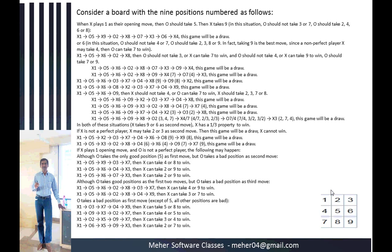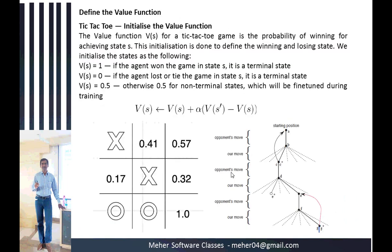For the tic-tac-toe value function, we initialize: value(s) = 1 if the agent won the game (terminal state), value(s) = 0 if the agent lost or tied (terminal state), and value(s) = 0.5 otherwise — representing a 50-50 chance. The sequence of positions in the value function shows that if X starts first, there are eight steps of possibilities. The moves can be represented by probability functions: opponent's move, our move, opponent's move, and so on, building the game tree.